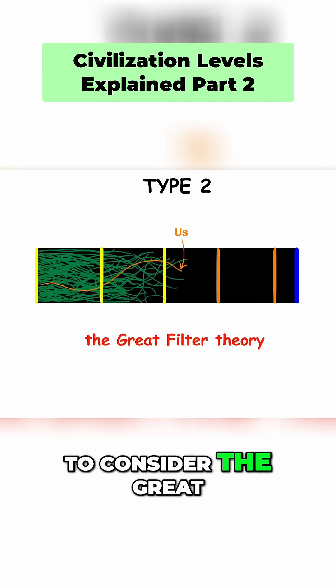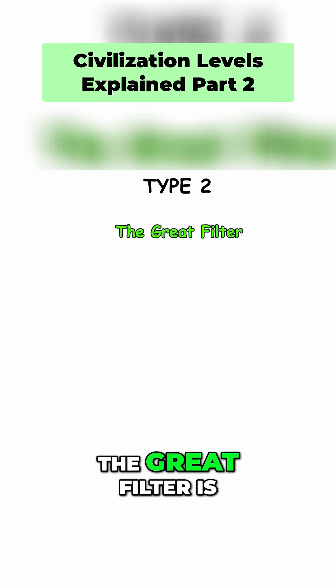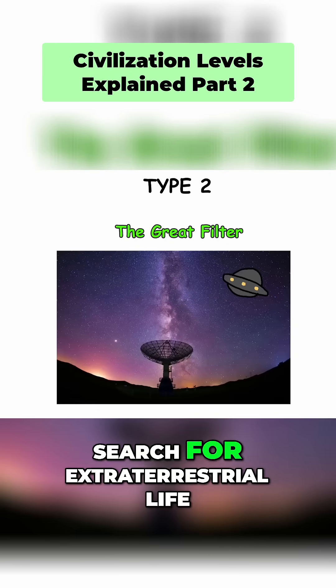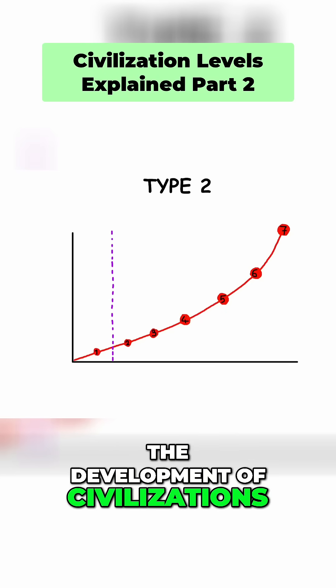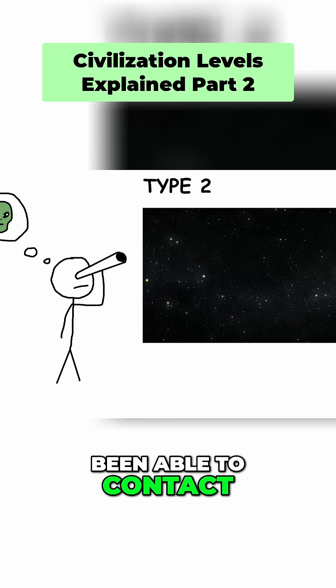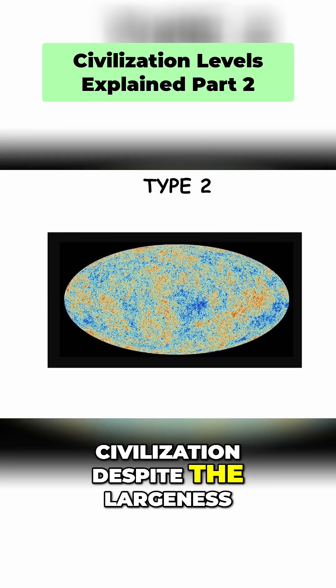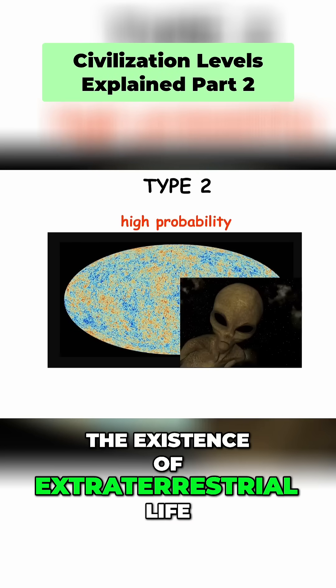It is also interesting to consider the Great Filter theory when considering the leap to a Type 2 civilization. The Great Filter is a concept in the search for extraterrestrial life that suggests there might be a stage in the development of civilizations that is extremely difficult to overcome, hence why we haven't been able to contact any type of intergalactic civilization despite the largeness of the universe and the high probability of the existence of extraterrestrial life.